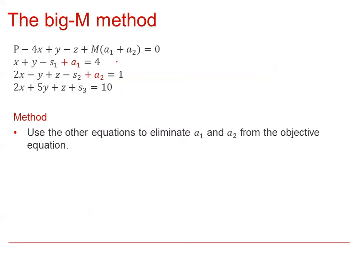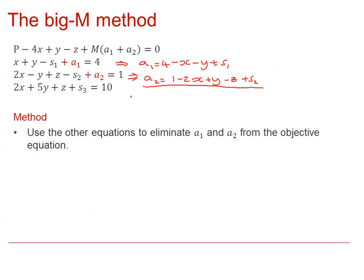First, we need to rearrange the two equations to make a1 and a2 the subject. We then need to find the total sum by adding these artificial variables together, giving us 5m minus 3x minus z plus s1 plus s2.